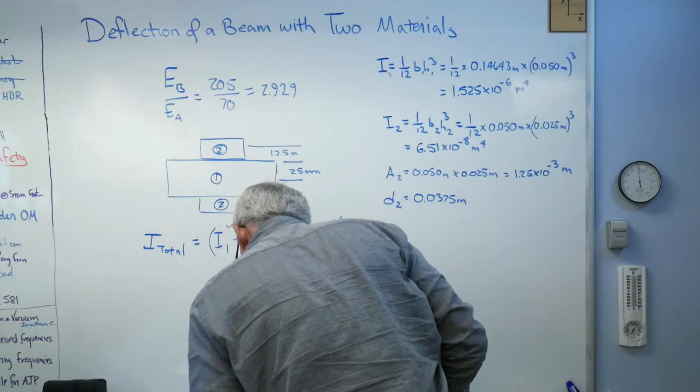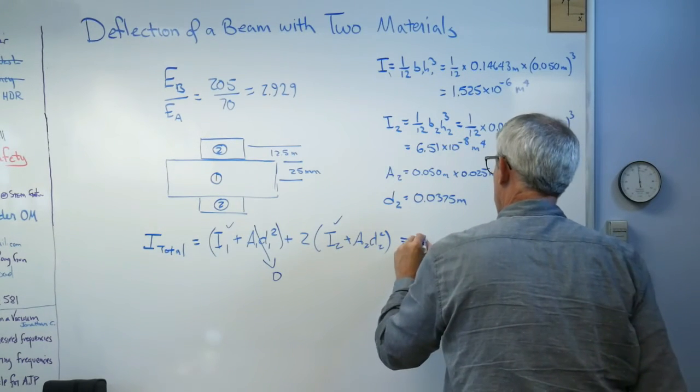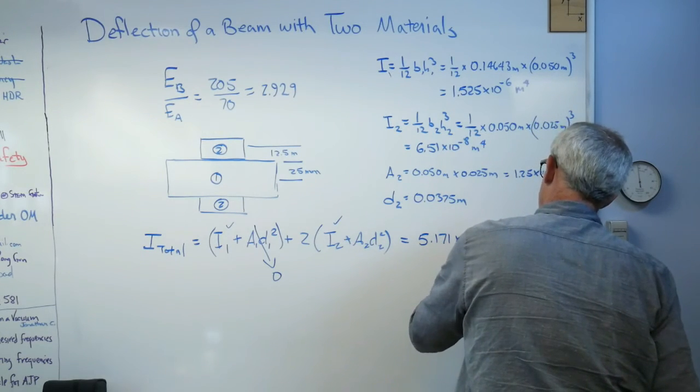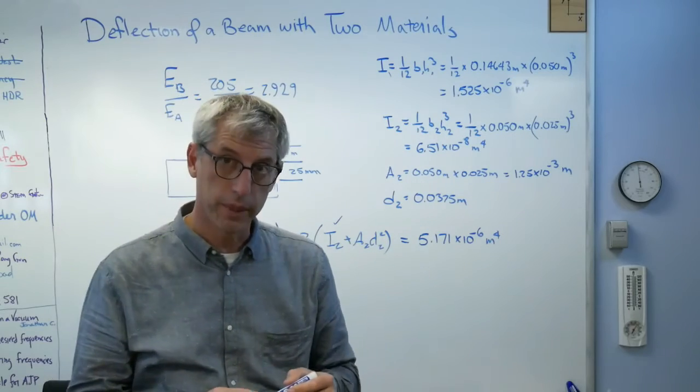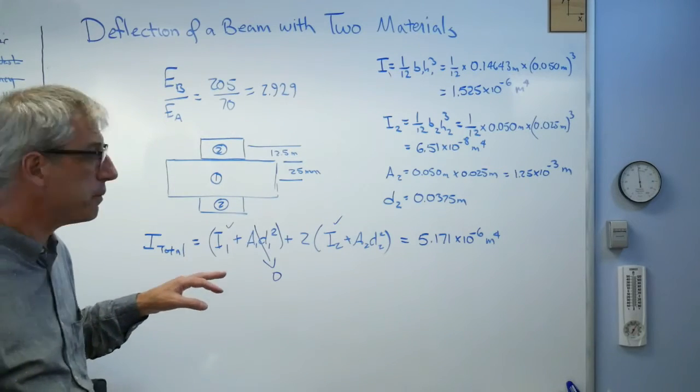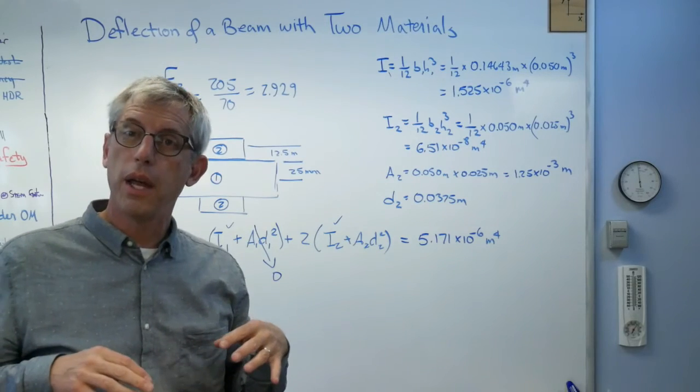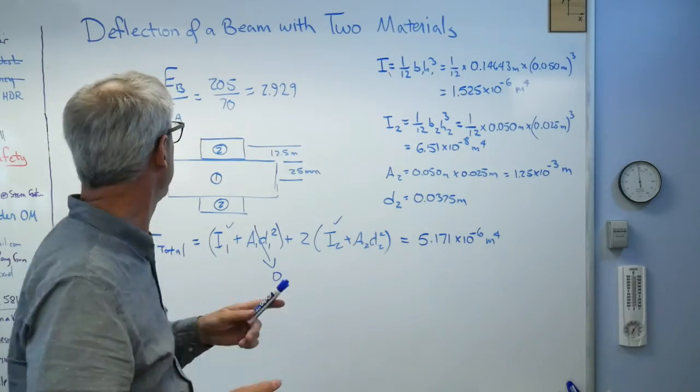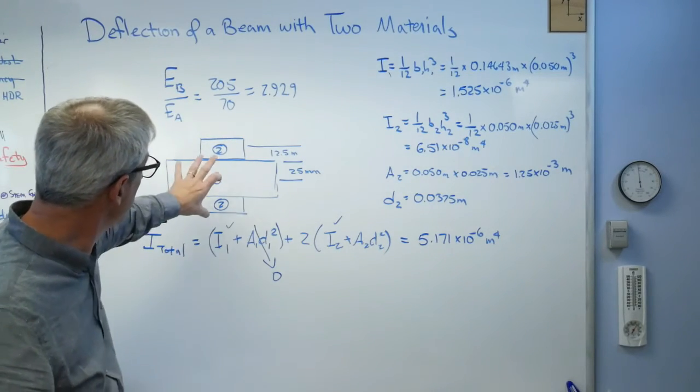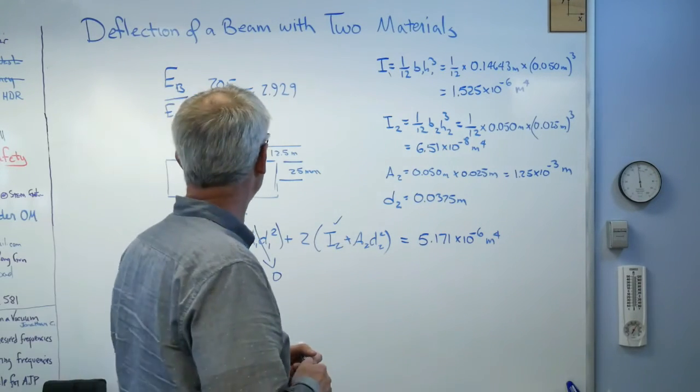All you got to do now is plug all that mess into there. And what you get is 5.171 times 10 to the minus 6 meters to the fourth. What we've done now, just to remind you what's going on here, is I've extended this to account for the fact that the stiffness of the steel in the center is 2.929 times as high as the stiffness of the aluminum. And then consider the whole thing to be made of aluminum. That works.